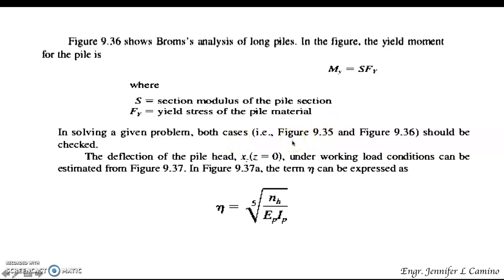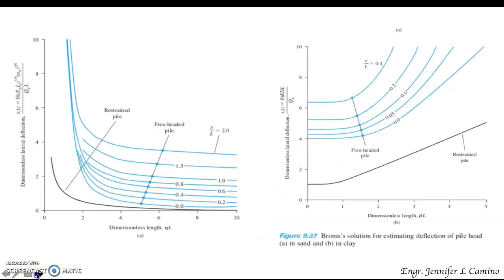For both short and long pile cases, the deflection of the pile head — denoted x_z at z = 0 — under working load conditions can be estimated from figure 9.37. The parameter eta is expressed as the fifth root of (n_H / (E_p × I_p)). The figure shows this solution for both free-headed and restrained piles in sand and clay.